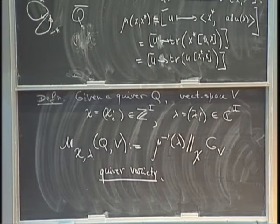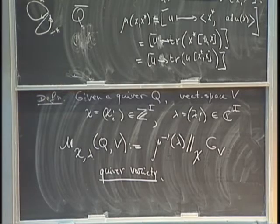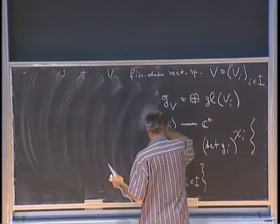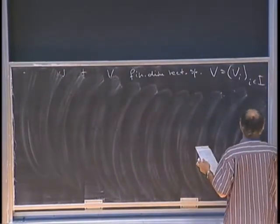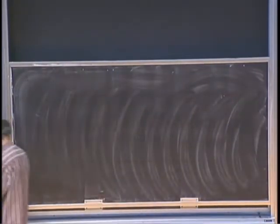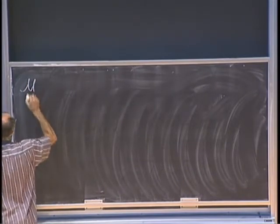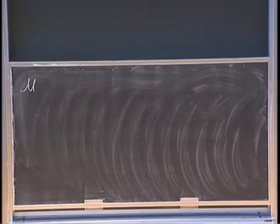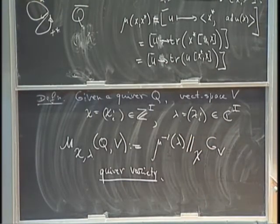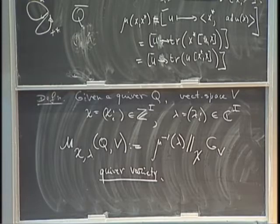Let's look at a basic example — the Jordan quiver. Each parameter is just one integer chi and one complex number lambda. We are interested in M sub-chi sub-lambda of this quiver (with one loop) at some vector space V.